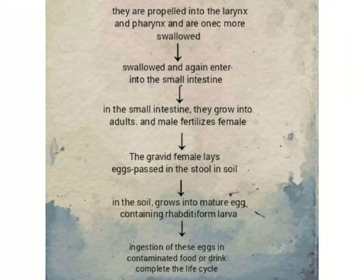The eggs pass through the intestine into the soil. In the soil, the eggs develop and grow into mature eggs containing rhabditiform larvae, completing the cycle.